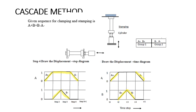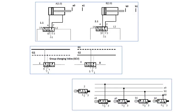Each cylinder requires 5 seconds to complete its forward and reverse stroke. Now we will see the circuit diagram. To design the circuit, the components are going to be grouped into two groups.